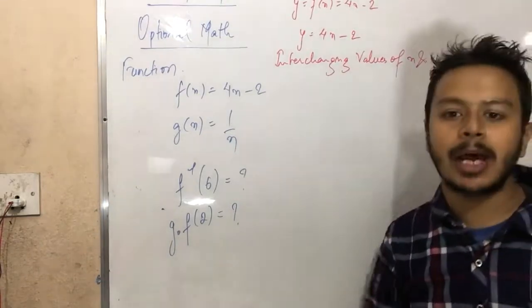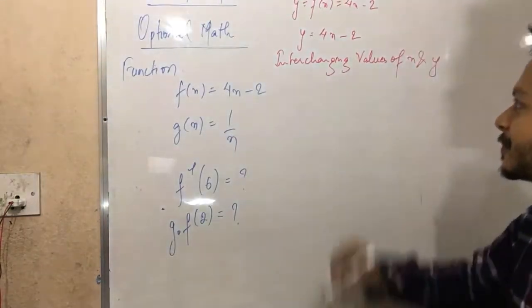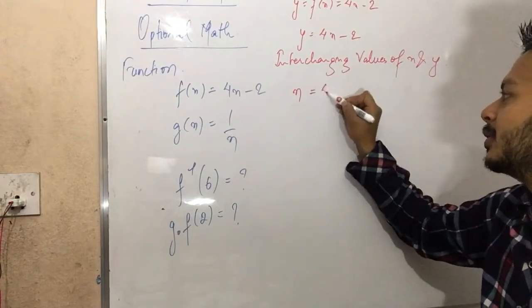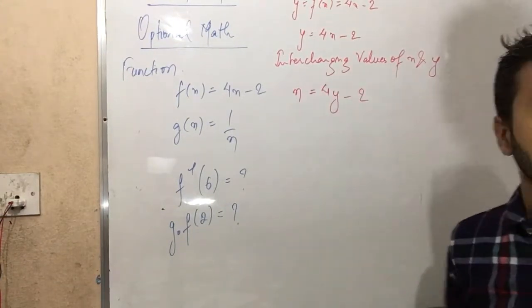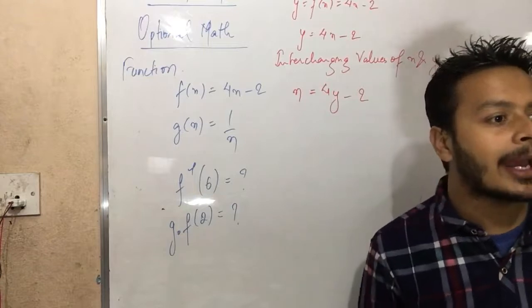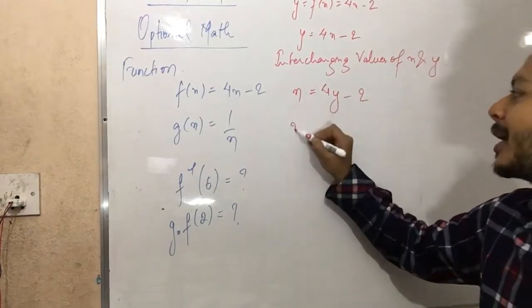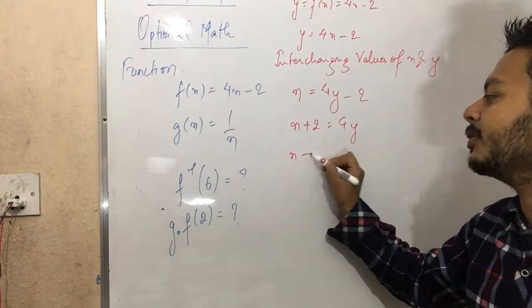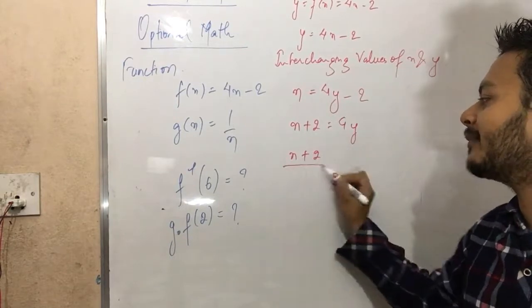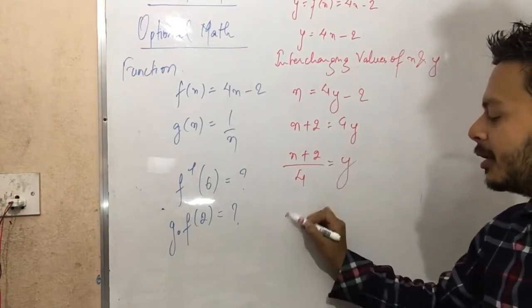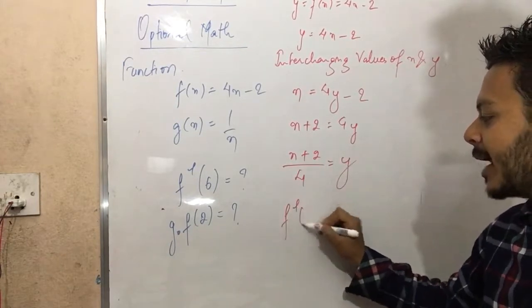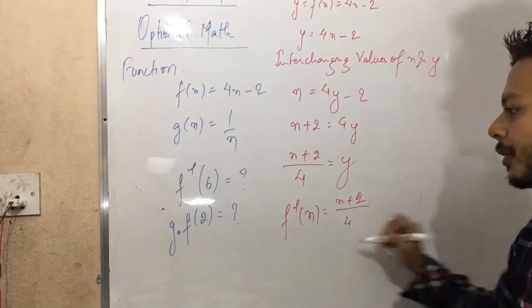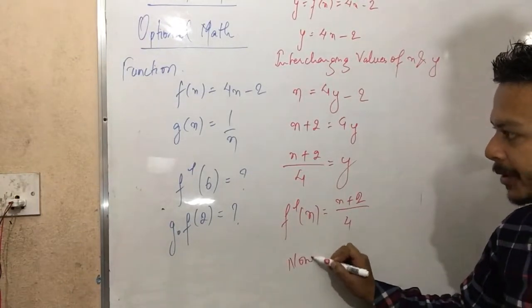After interchanging: x = 4y - 2. So x + 2 = 4y, which ultimately gives x + 2 by 4 = y. So f inverse of x is (x + 2) / 4.